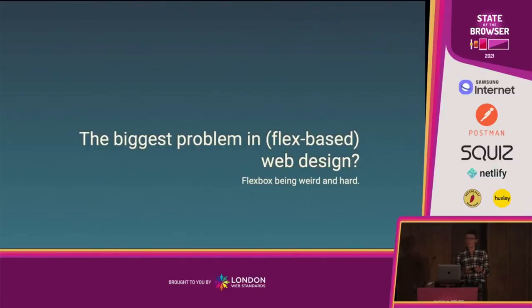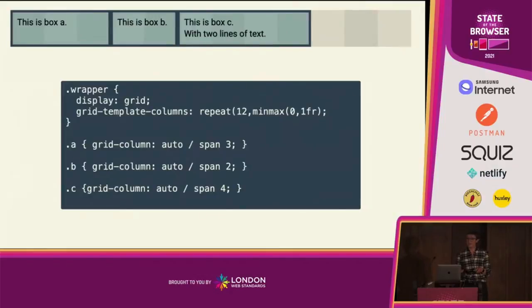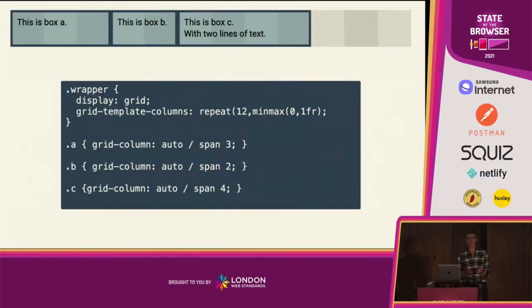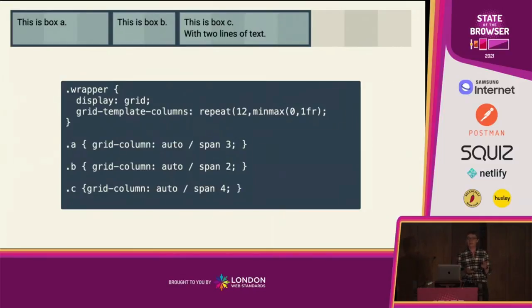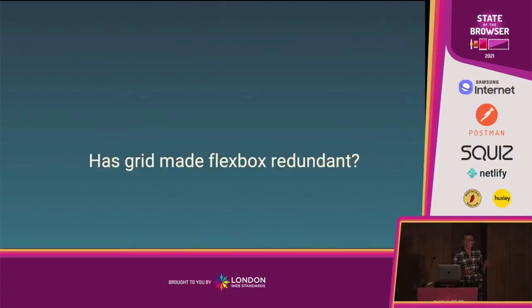People started having problems with Flexbox — it was weird, it was hard, it didn't do a grid very well. Lining things up in two dimensions was hard, and creating gaps between flex items was just a bit weird. Then we got grid layout, which solved those problems. We could line things up in two dimensions and make our 12-column grid much better. But we miss a lot about these layout methods if we try to use them just to create a better fixed grid.